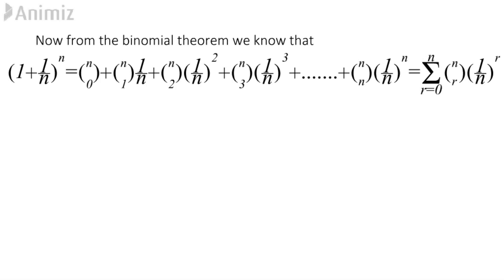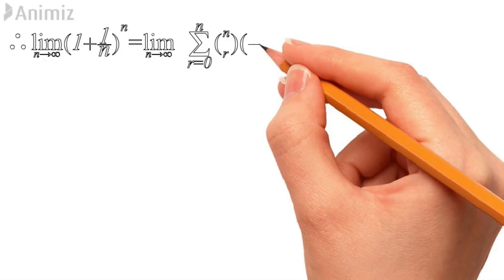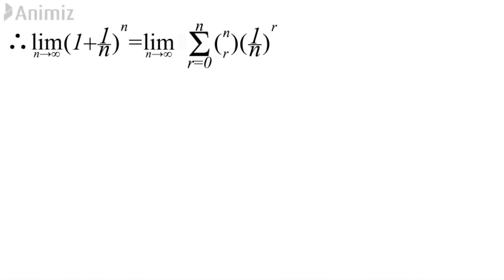We can write this under one summation: Σ nCr·(1/n)^r, with r going from 0 to n. So we get: limit n→∞ of (1 + 1/n)^n equals limit n→∞ of Σ nCr·(1/n)^r, with r from 0 to n.